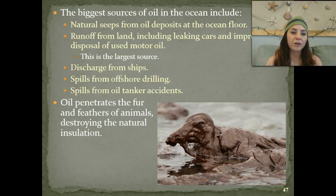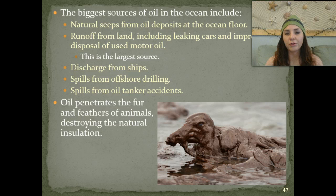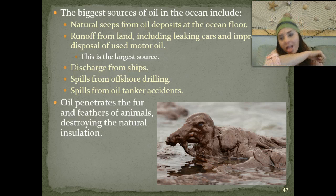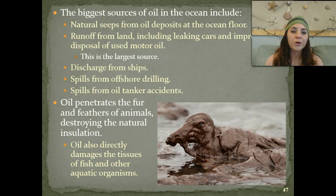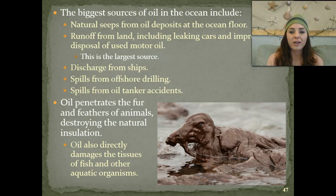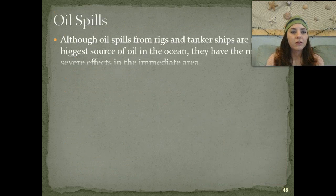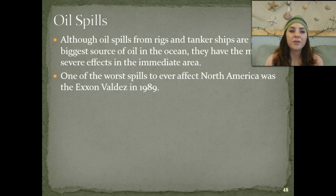Oil penetrates the fur and feathers of animals and destroys their natural insulation, so many animals will actually die of hypothermia because they get so cold. A lot of times they'll also poison themselves because they're sitting there trying to lick the oil off and clean themselves. Oil also directly damages the tissues of fish as well as other aquatic organisms that become coated in it. Although oil spills from rigs and tanker ships are not the biggest source of oil in the ocean, they have the most severe side effects in the immediate area.